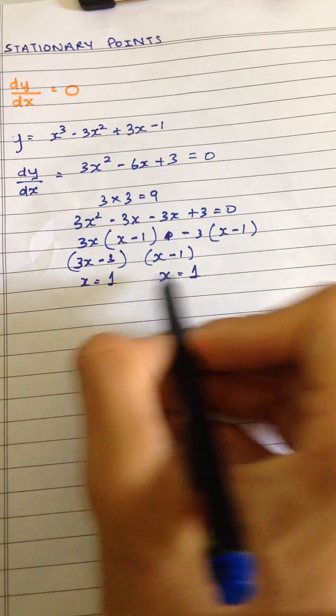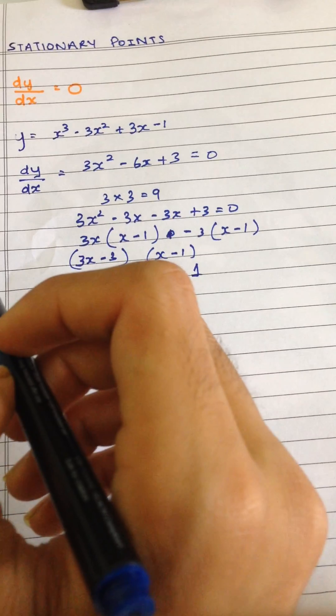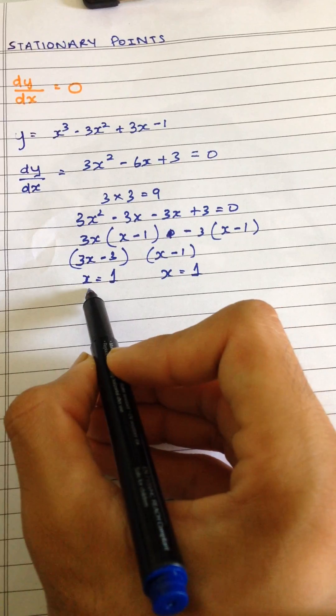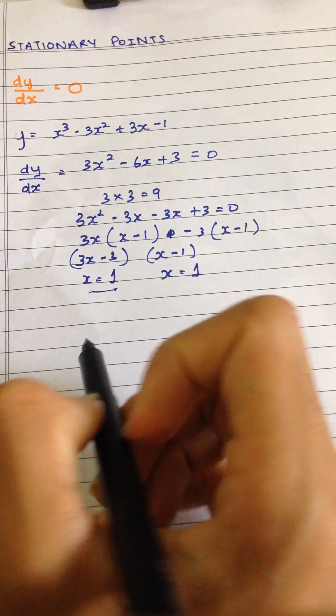So as you can see both of them are the same so there is only one stationary point on this curve. So now this is the x value of the stationary point.